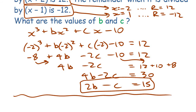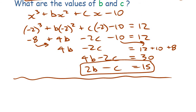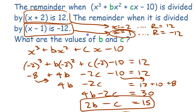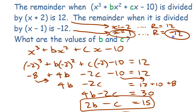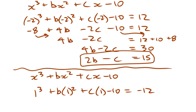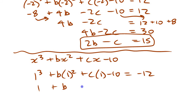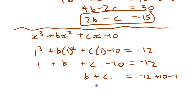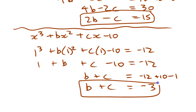For the second equation, substituting x equals 1 into x cubed plus bx squared plus cx minus 10 equals negative 12 gives: 1 plus b plus c minus 10 equals negative 12. Simplifying: b plus c equals negative 3. So we now have two equations with two unknowns: 2b minus c equals 15 and b plus c equals negative 3.